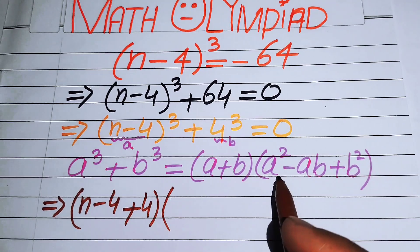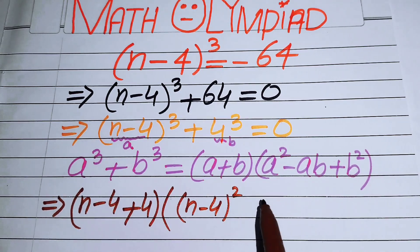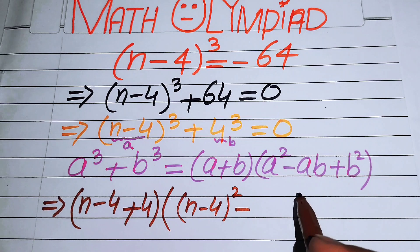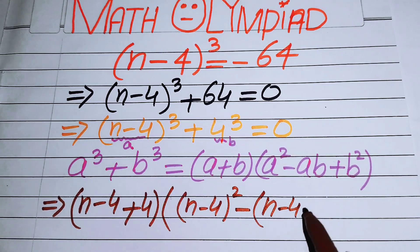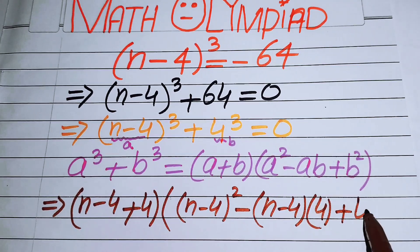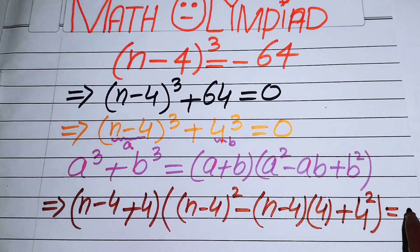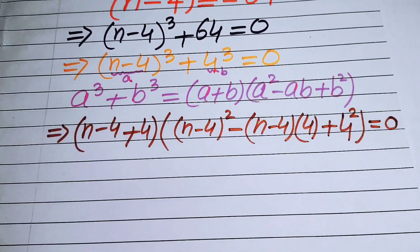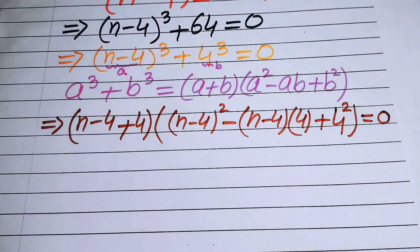Continuing the substitution: a² is (n - 4)², minus ab where a is (n - 4) and b is 4, plus b² which is 4², and this whole expression equals 0. We have just put the values of a and b into the formula.